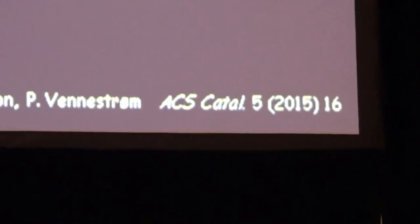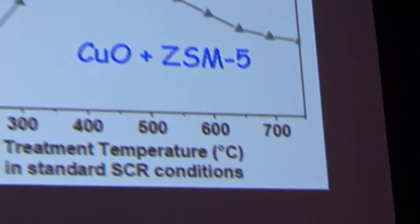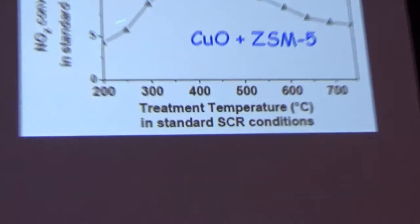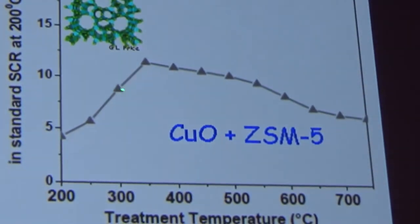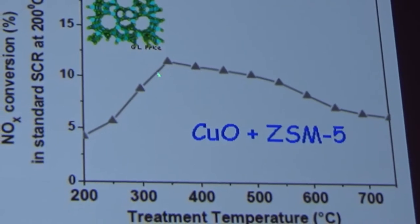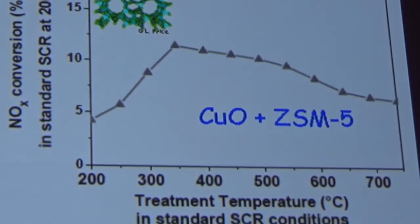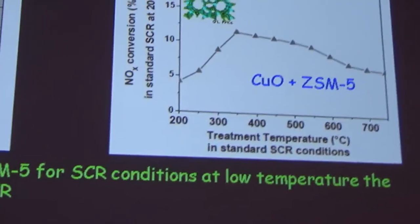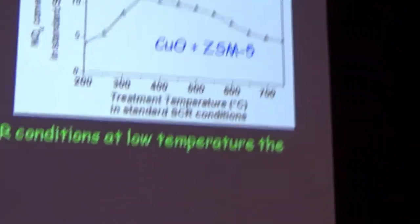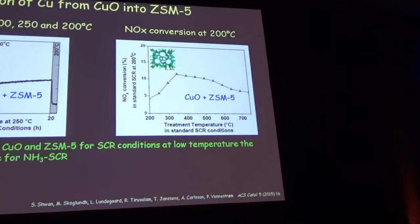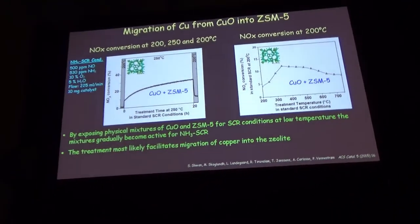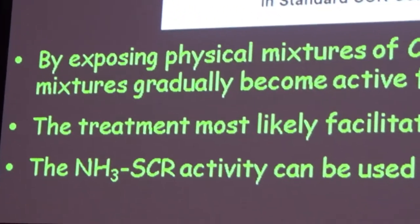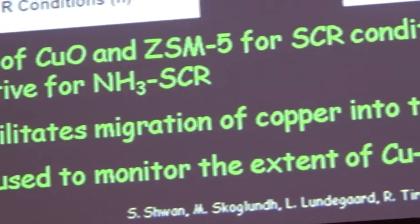After 20 hours we decrease the temperature back to 200 degrees and find a higher conversion than at the start. We do this experiment to check what temperature is required to initiate this process, stepping by 50 degrees Celsius with one-hour exposures. We see a maximum around 350–400 degrees Celsius for the copper ZSM-5 structure. By exposing the physical mixture to ammonia SCR conditions, the catalyst became more and more active, and the SCR activity can be used to monitor the extent of copper migration.